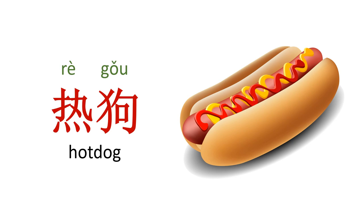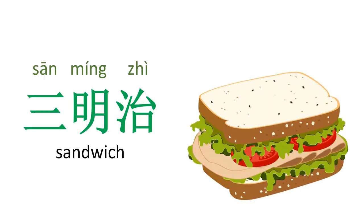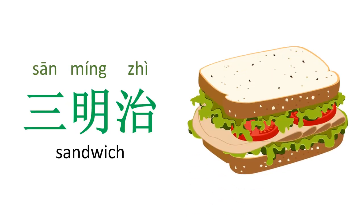香肠 — sausage. 热狗 — hot dog. 三明治 — sandwich.